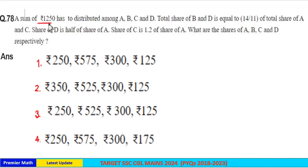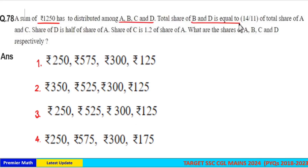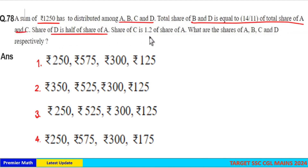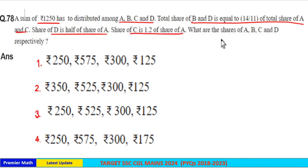A sum of ₹1250 has to be distributed among a, b, c, and d. The total share of b and d is equal to 14/11 of the total share of a and c. The share of d is half the share of a, and the share of c is 1.2 times the share of a. Find the shares of a, b, c, and d.